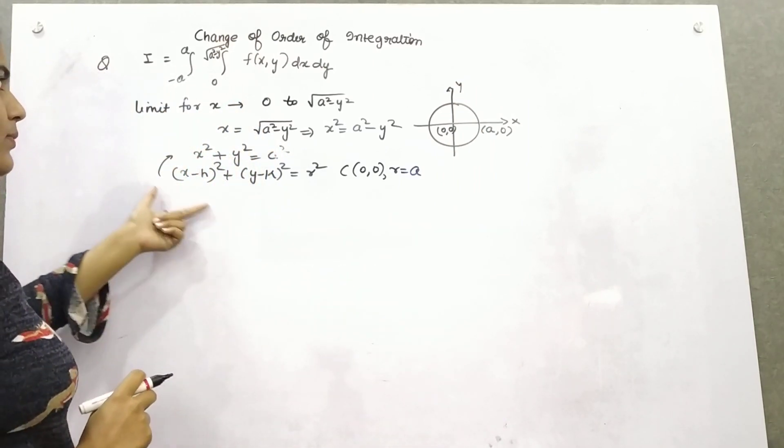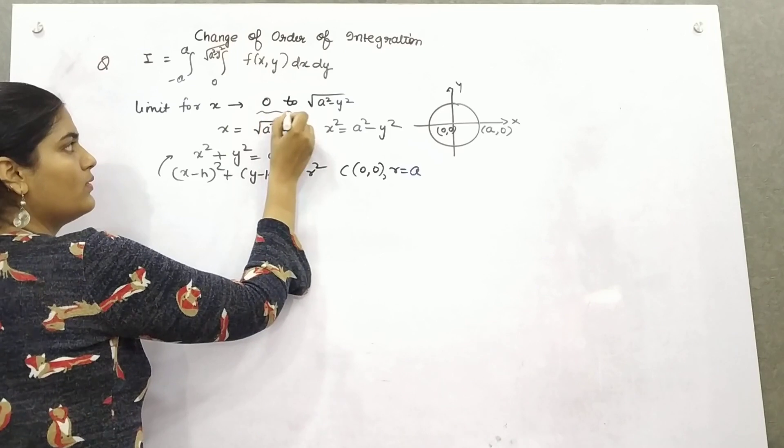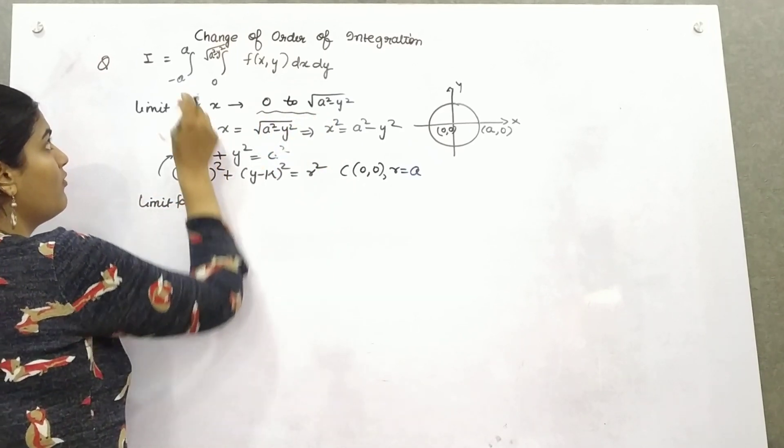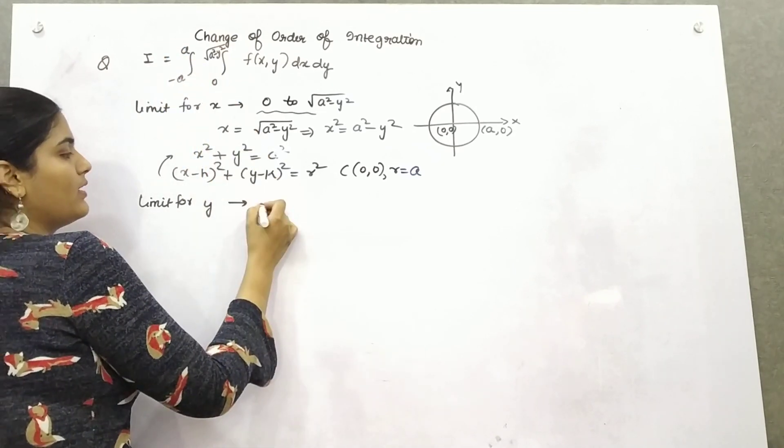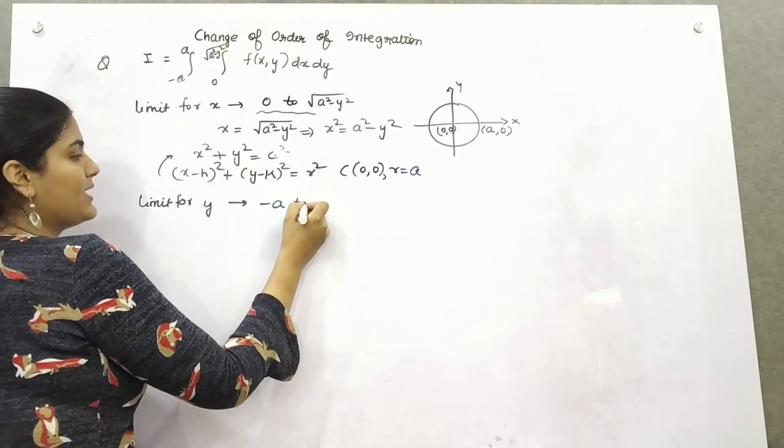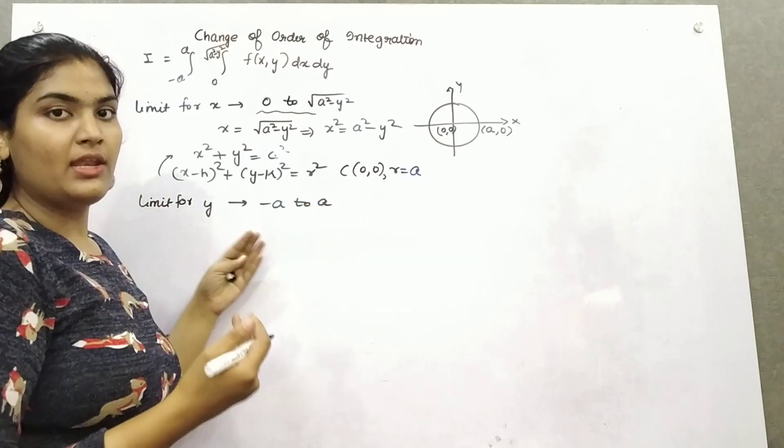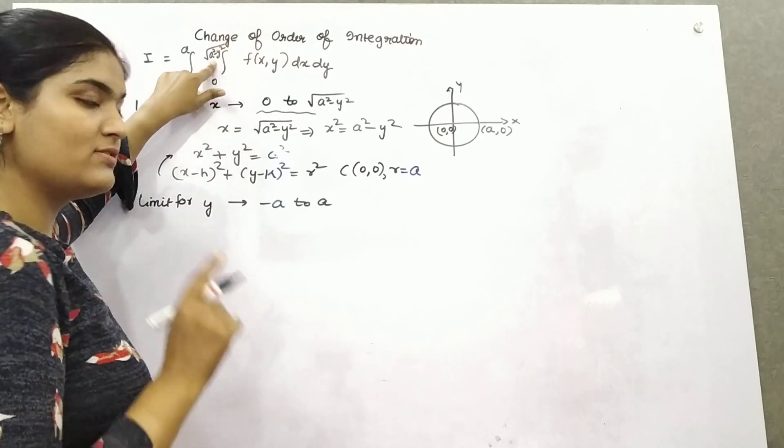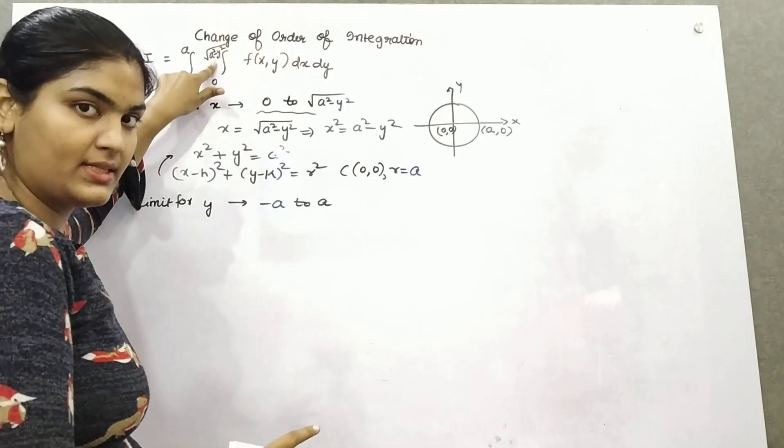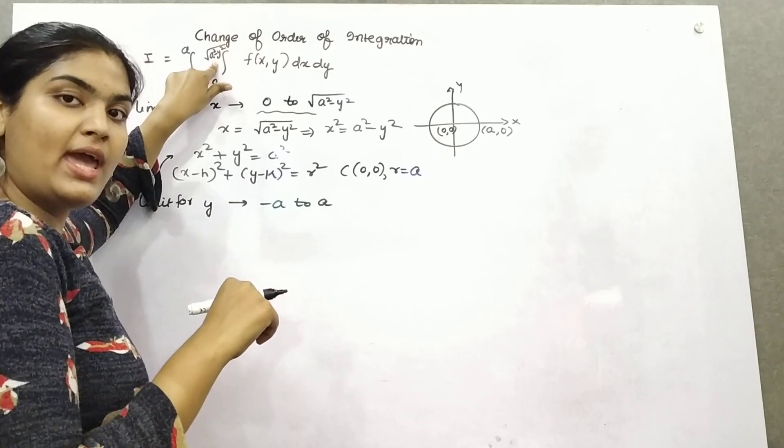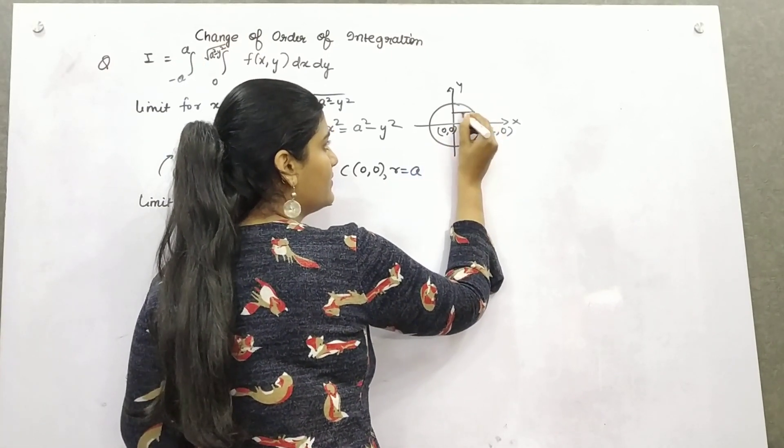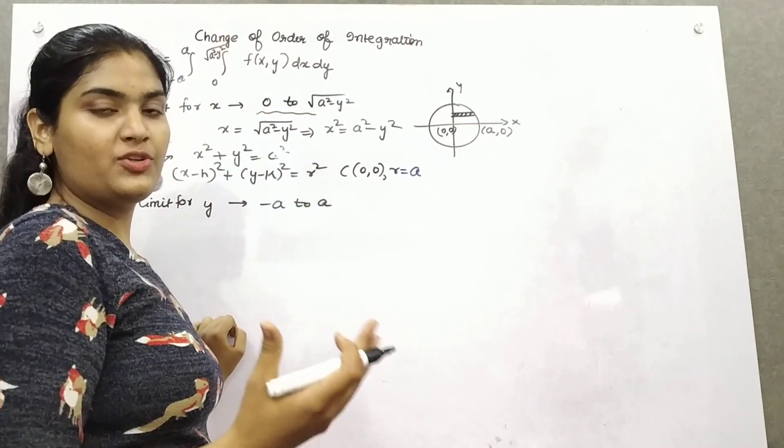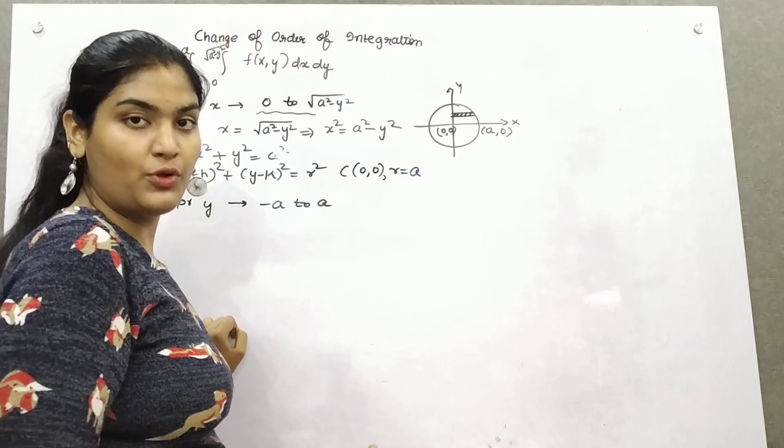Now this is the limit for x moving from 0 to root a square minus y square, and the rest is the limit for y, which is varying from minus a to a. Now you have to change the order. First of all, as I told you, because this particular limit has y, that means it is a limit for x. And because it is a limit for x, that means it will be parallel to the x-axis.